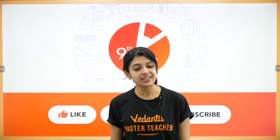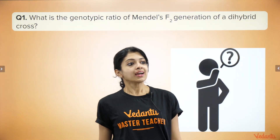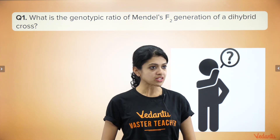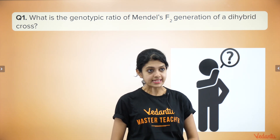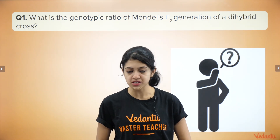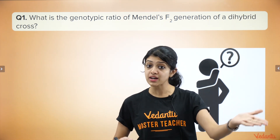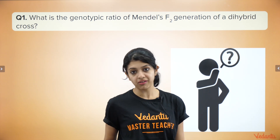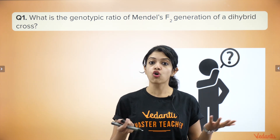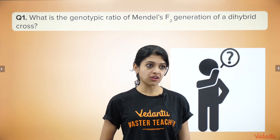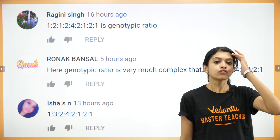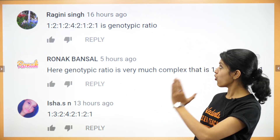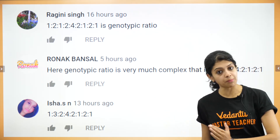We had a couple of homework questions in yesterday's session. One of them was: what is the genotypic ratio of Mendel's F2 generation of a dihybrid cross? Remember, we learned about monohybrid cross in the first session and dihybrid cross in the second session, and we discussed the phenotypic ratio. Ragini Singh answered 1:2:1:2:4:2:1:2:1 as the genotypic ratio. Ronak gave the same answer as Ragini. Isha also gave an answer but with a slight difference — a 3 instead of a 2 and a 1.